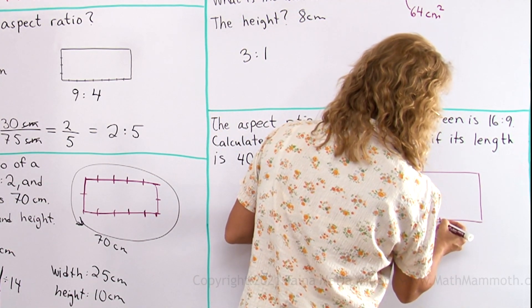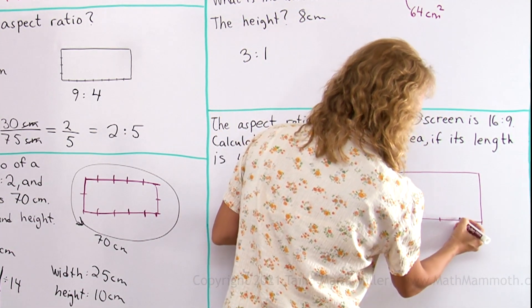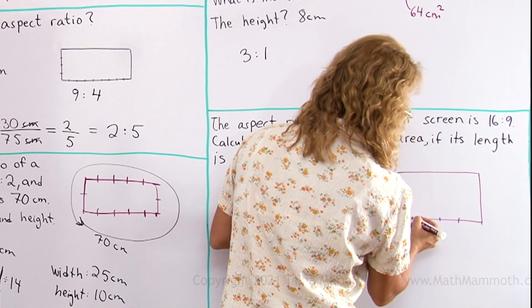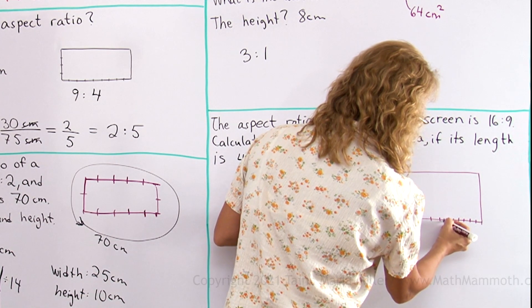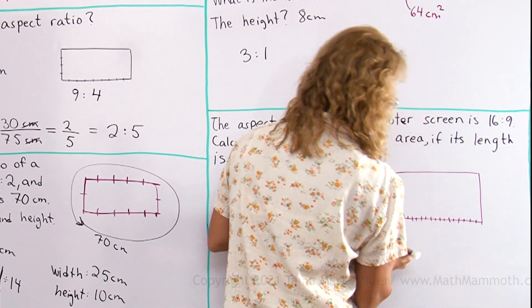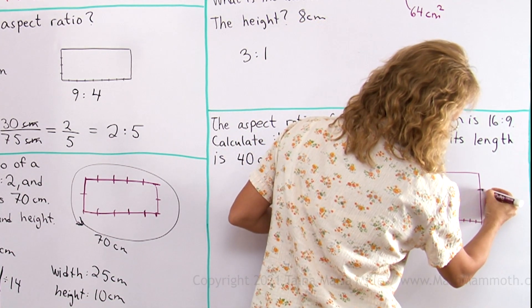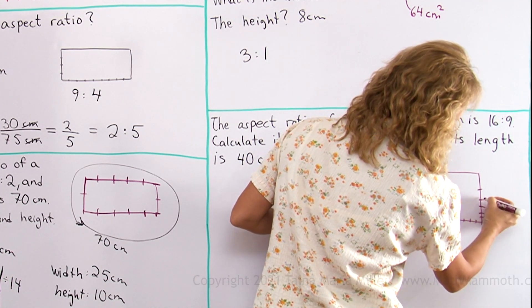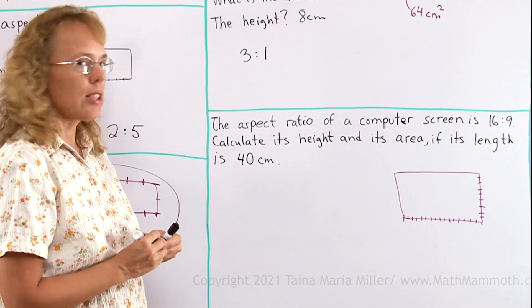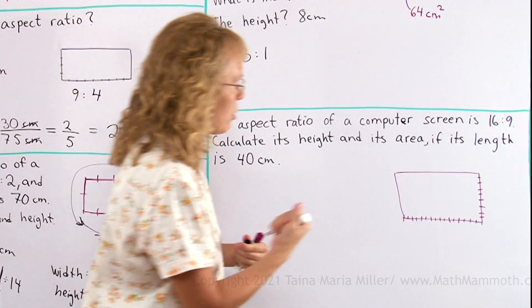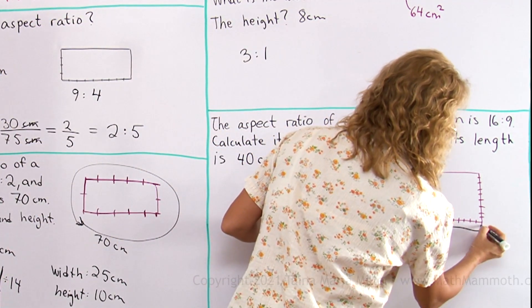16 I can draw pretty easily. So I'll divide this in half first. Then into fourths and then into eighths and then into 16. There we go. And then 9 parts over here. 16 to 9. And its length is 40 centimeters. Let me mark that there too. This here is 40 centimeters.